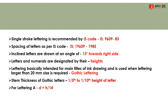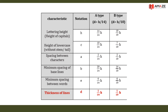For lettering type A, D equals H divided by 14, where D is the stem thickness and H is the height. For lettering type B, D equals H divided by 10. The lettering table provides values for lettering A and B including: lettering height, height of lowercase letters, spacing between characters, minimum spacing of baselines, minimum spacing between words, and thickness of lines.